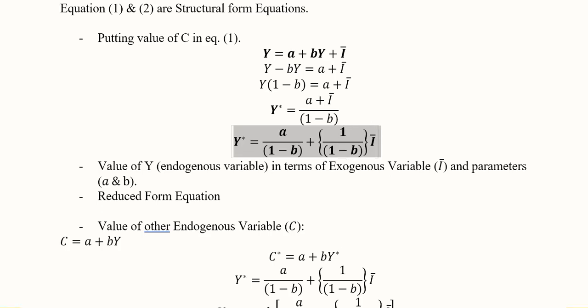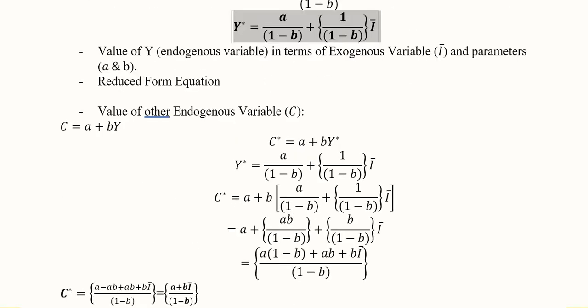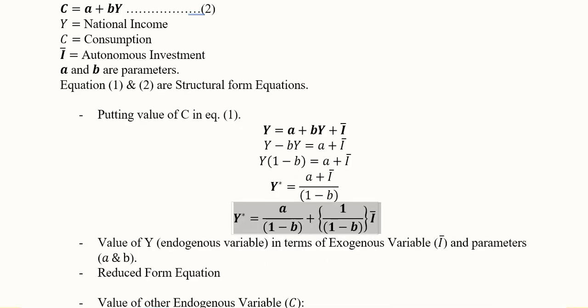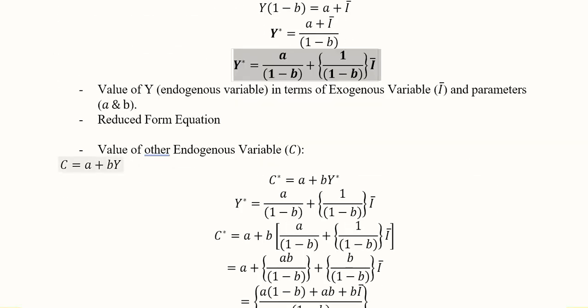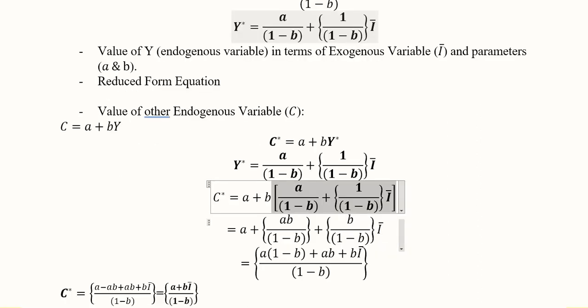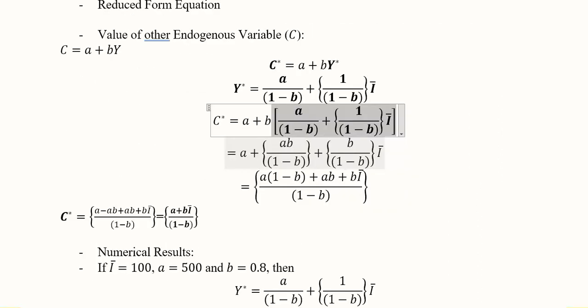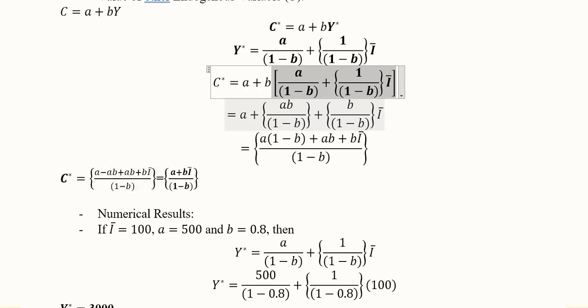We can also find the other endogenous variable, that is capital C. For that, simply I can put Y asterisk in this equation. So you can see that C asterisk can be found by replacing Y with Y asterisk, and we know that Y asterisk is equal to this which we can put here. You can see the value substituted. Simplification is very easy, you can do it.